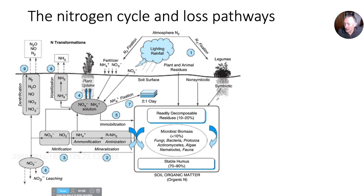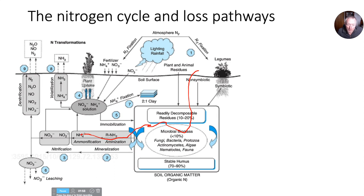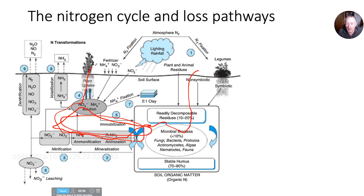Essentially what we want to see happen is an internal nitrogen cycle. Crop uptake occurs from soluble forms — nitrate and ammonium — in the soil solution. It takes water and soluble nutrients for plants to take up. Those come from several sources and are taken up by microbes in the soil organic matter pool, which mineralizes to become ammonia and nitrate in the soil solution. It can be re-immobilized by soil microbes and conserved, and we have this internal nitrogen cycle.